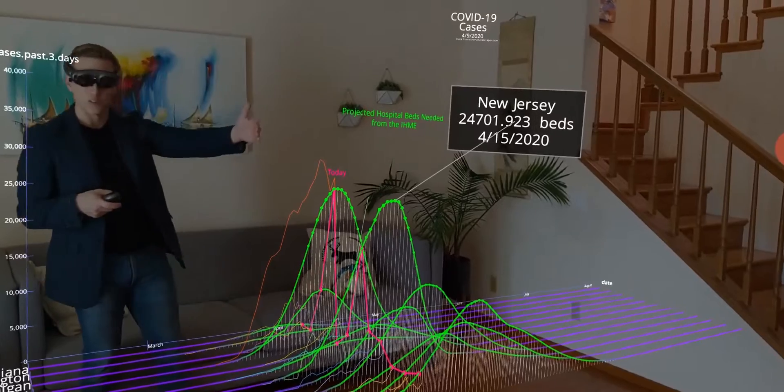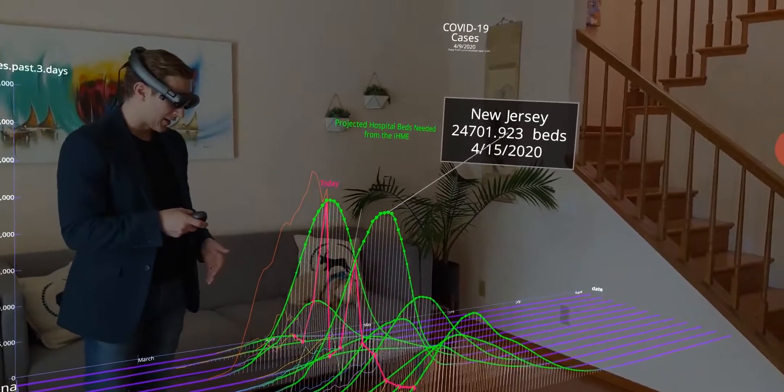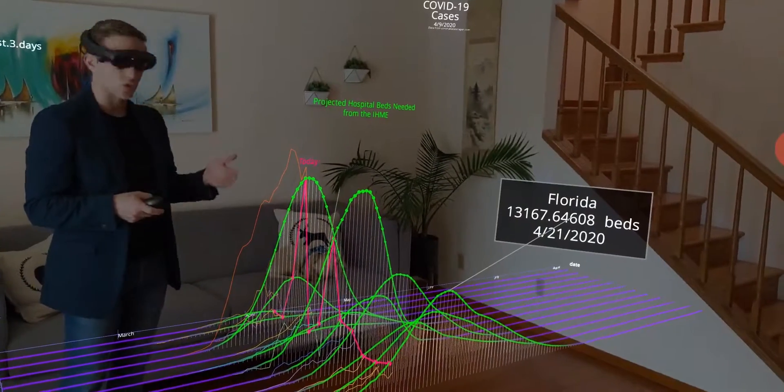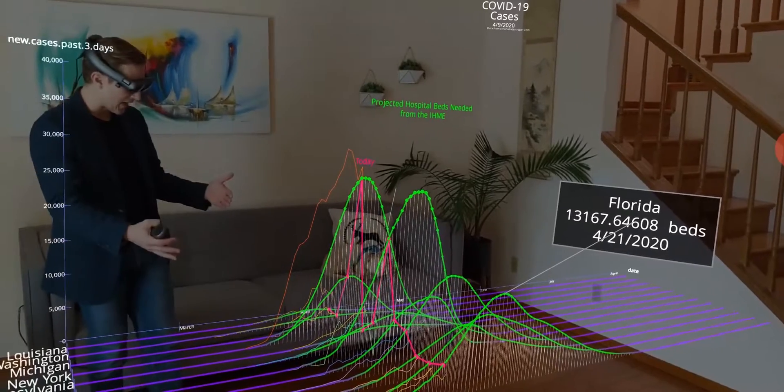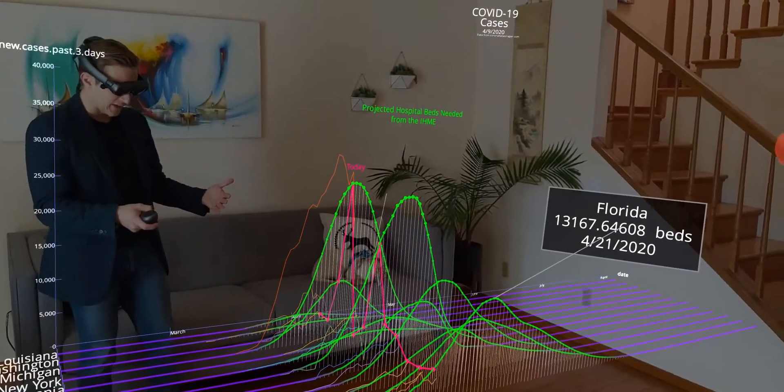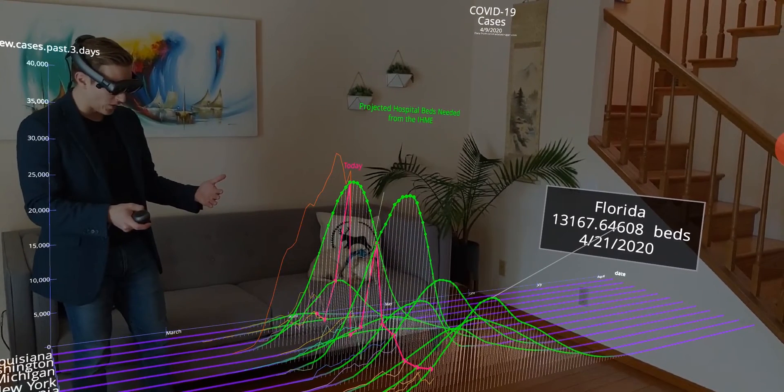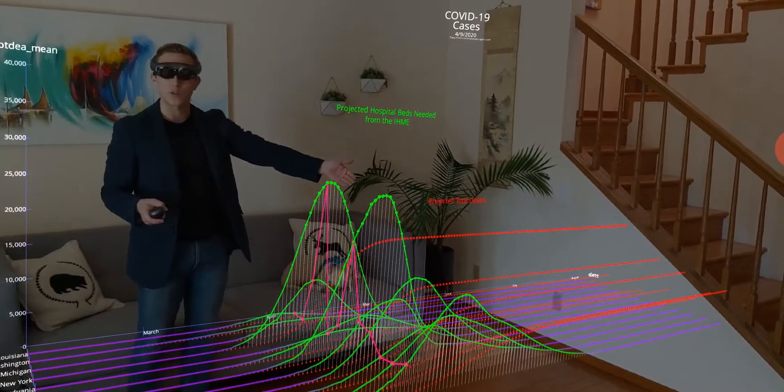But if we look at New Jersey, New Jersey is expected to peak more on the 15th. And down here, Florida is much later on the 21st. So we're on different timelines. We have different needs. And one thing that they also predict with this model is the total number of deaths that we can anticipate.